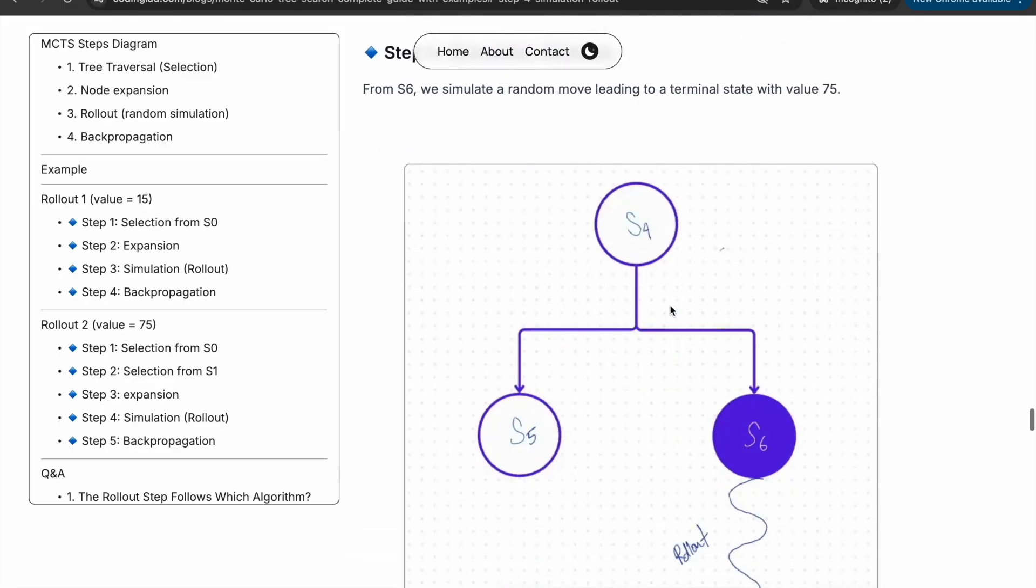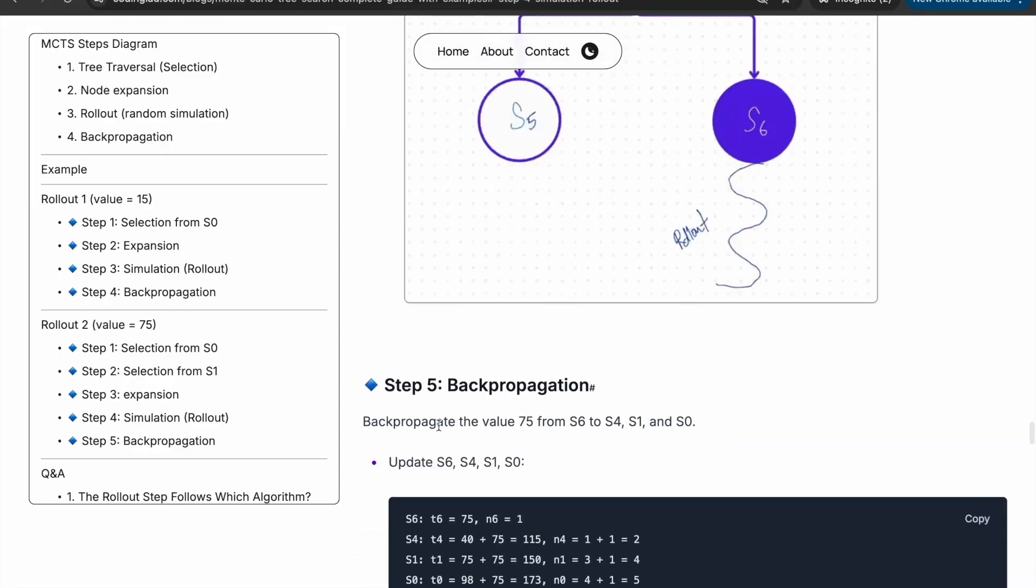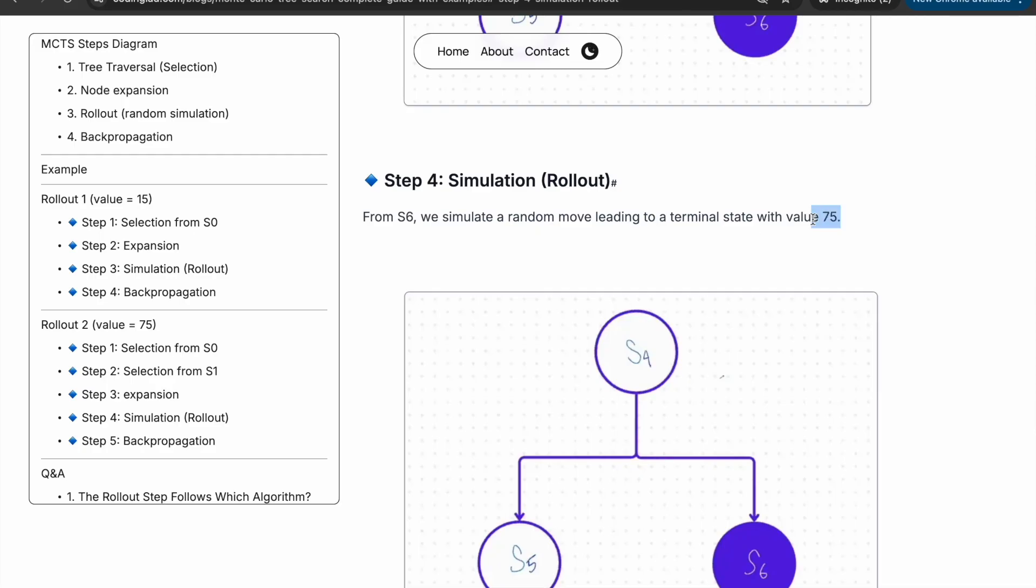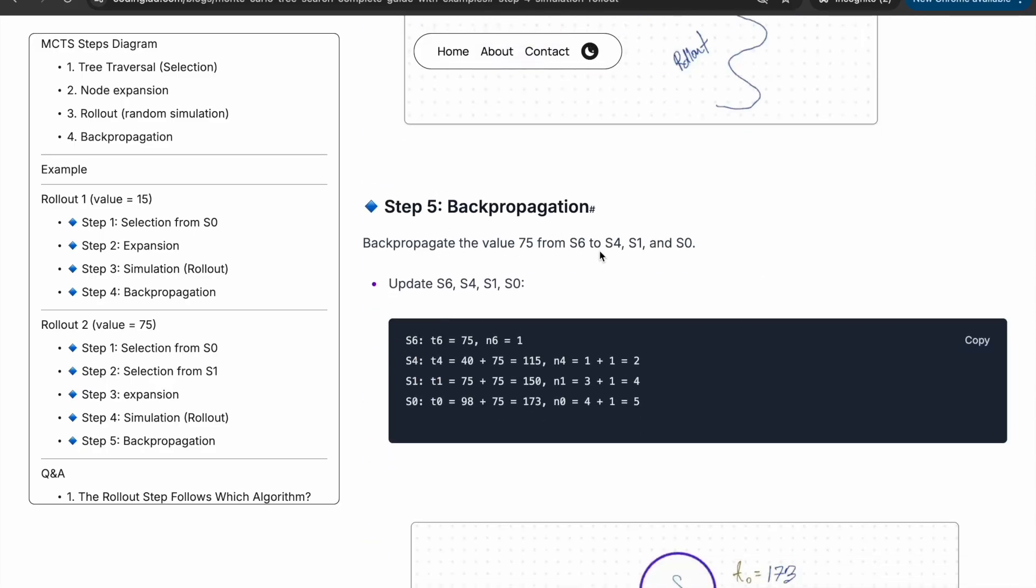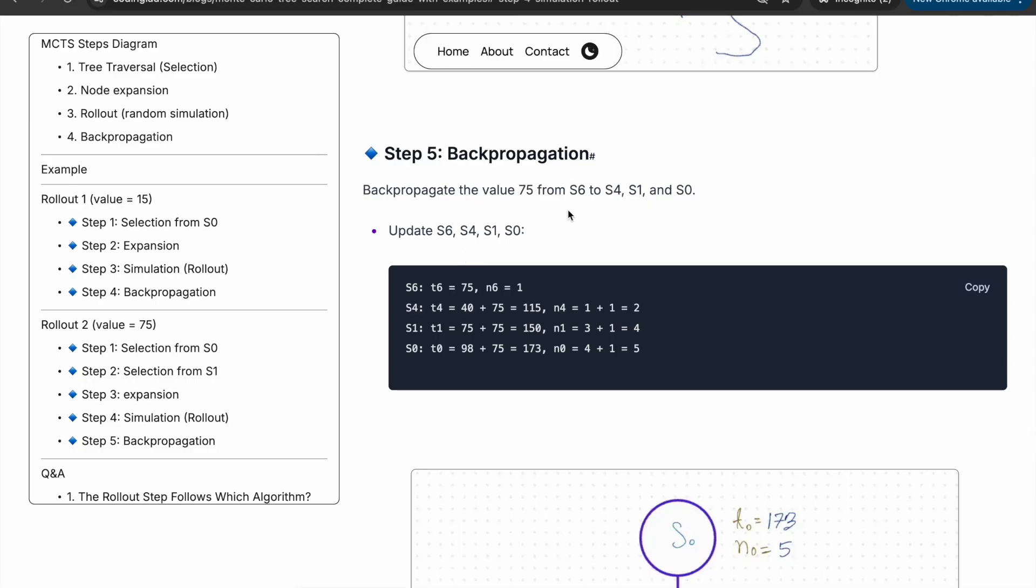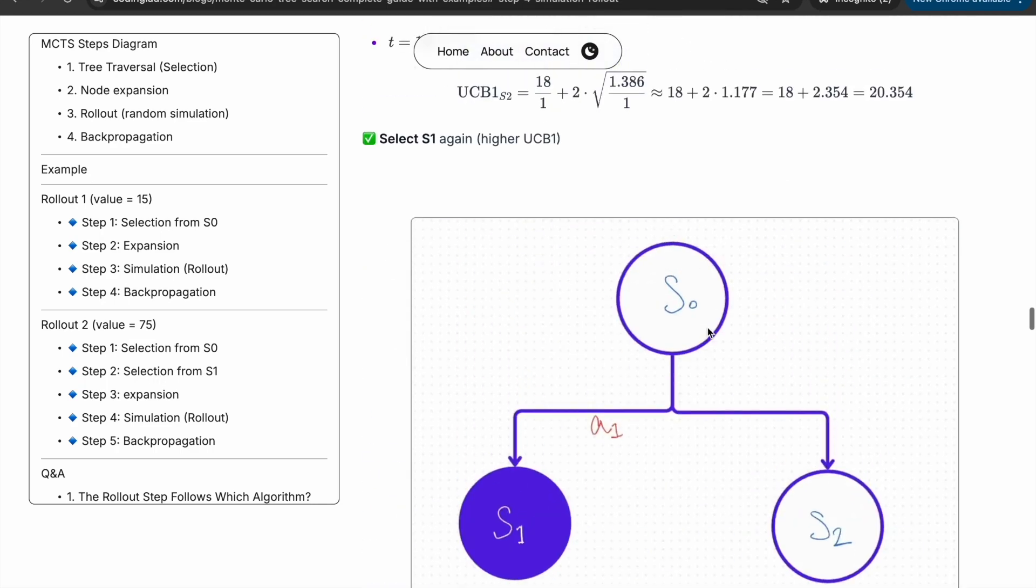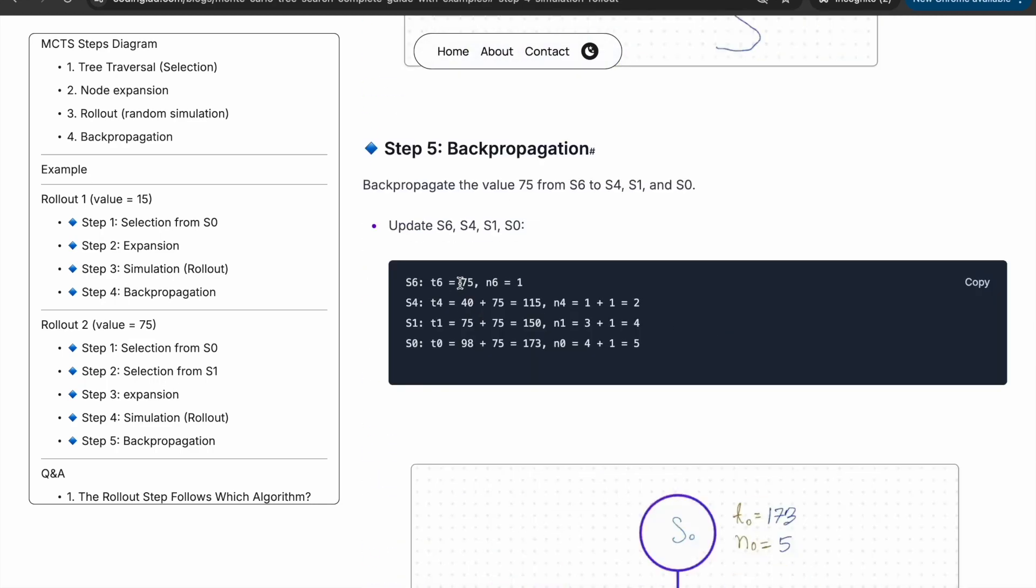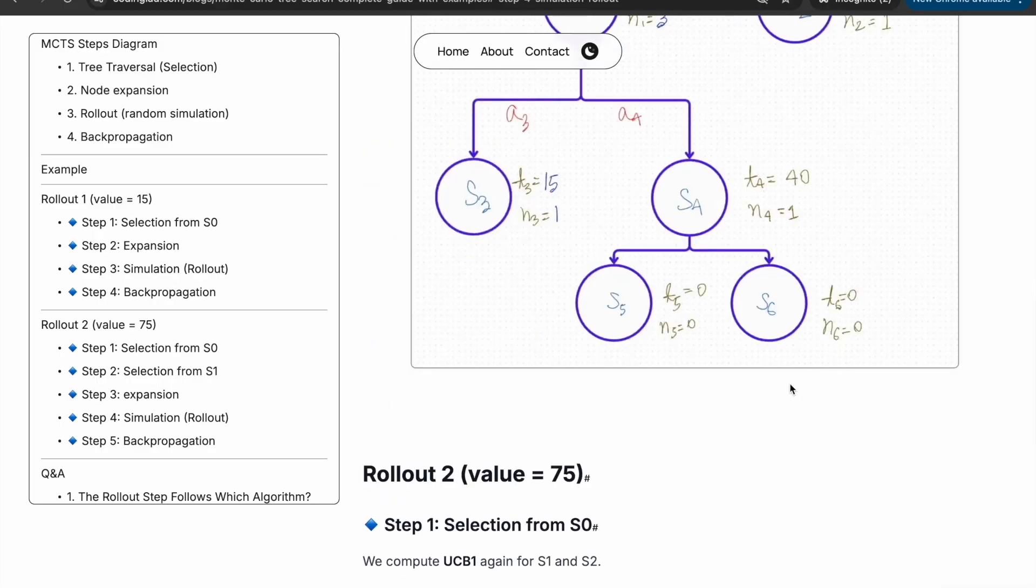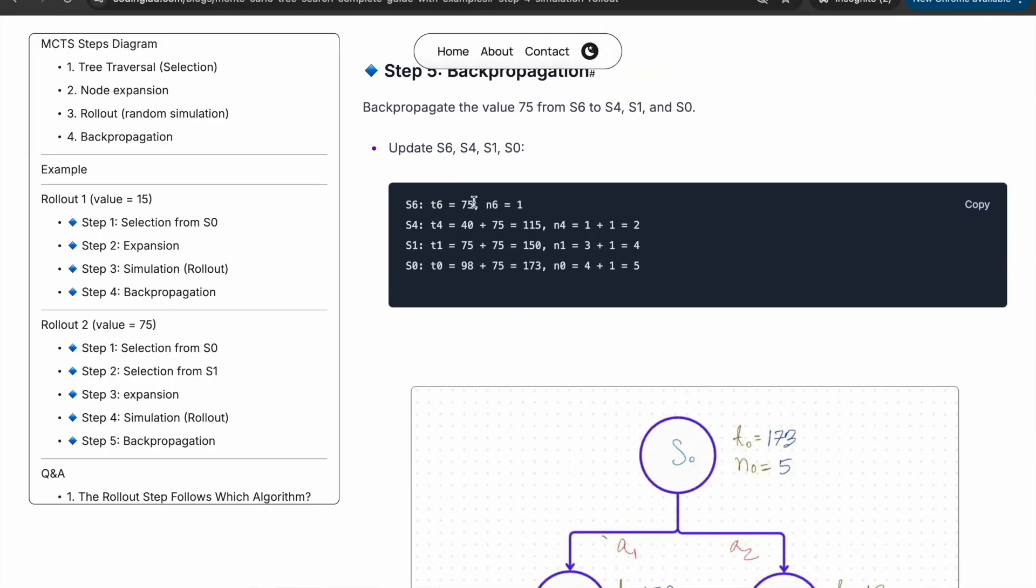Then comes simulation or rollout. We will perform rollout from s6, and the second rollout is returning 75. Now we backpropagate the value 75 from s6, then s4, then s1, then s0. T6 was 0 and n6 was also 0, so it will become 75 and 1. T4 was 40, so it will become 115. N4 was 1, it will become 2. In this way, we are adding 75 to t and increasing n values by 1.